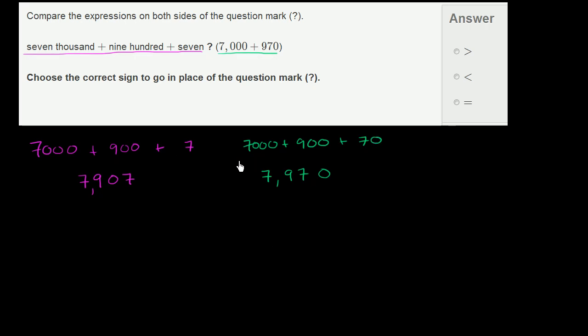So if we compare place value by place value, we have 7,000 in either case. So the thousands place is the same. We have the same number of hundreds. We have 900. But here we have no tens, and we have a 7. And here we have no ones, and we have 70.